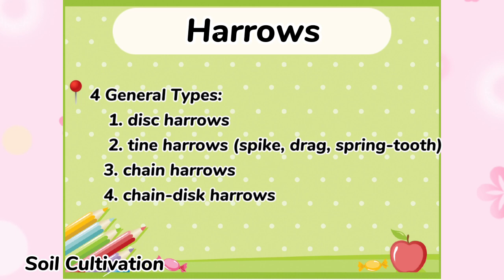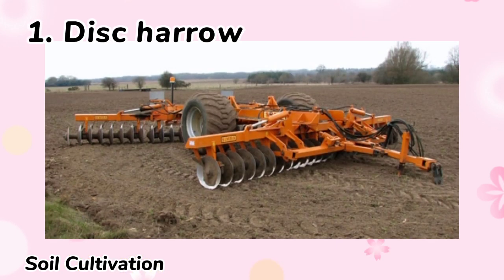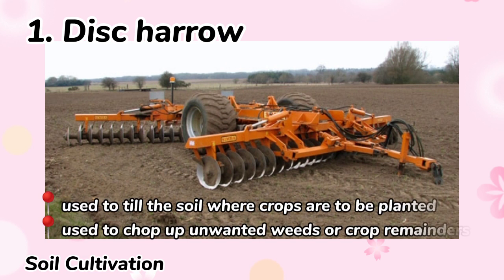Third, chain harrows. And fourth, chain disc harrows. Disc harrows is a harrow whose cutting edges are a row of concave metal discs. It is used to till the soil where crops are to be planted and is used to chop up unwanted weeds or crop remainders.